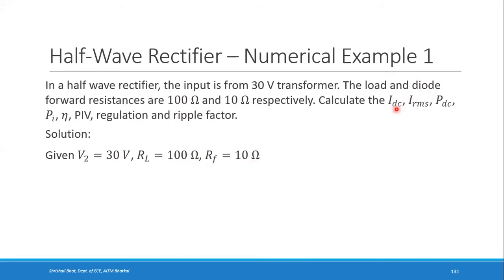To find IDC, the formula for a half wave rectifier is IDC = Im/π. To find Im, we need Im = Vm / (RF + RL). So we first need Vm. The input V2 is the transformer secondary voltage — an AC signal of the form Vm·sin(ωt) — where Vm is the peak value.